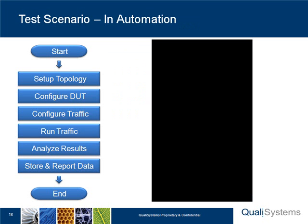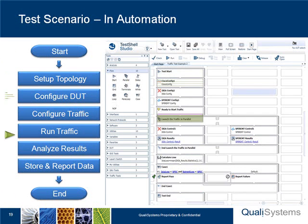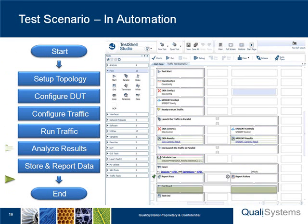At the end, I need to collect and log all that information, whether done manually or through an automated environment. Some automation is based on scripting, where I'm using different scripts to control the equipment, to set up the flow of the test, to collect the information, and to analyze it. Another direction is to use an application like TestShell Studio, where every step has a wizard that takes care of all the different components necessary to control the equipment, analyze it, and report it.